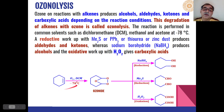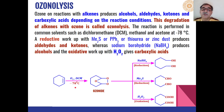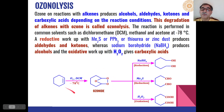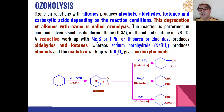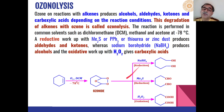For example, when cyclohexene is reacted with ozone in dichloromethane as solvent at minus 78 degrees centigrade, ozone first adds across the carbon-carbon double bond to give an ozonoid intermediate. This ozonoid can then give us different types of products like alcohols, aldehydes, or carboxylic acids depending upon which reagent is used for workup.